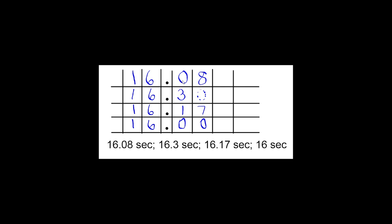My tenths place, I notice I have a zero, a three, a one, and a zero. So this is a very close race. If I'm talking about being fast and my least number, my very top number, 16 and eight hundredths, and 16 and zero hundredths, they both have a zero in the tenths place. So I actually am looking at just this number and this number to determine which one is the least. So I need to then look at my hundredths place.